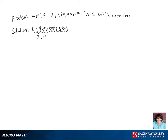So we've got 1, 2, 3, 4, 5, 6, 7, 8, 9, 10 places that we moved our decimal. So our final answer is 1.196 times 10 to the 10th power.